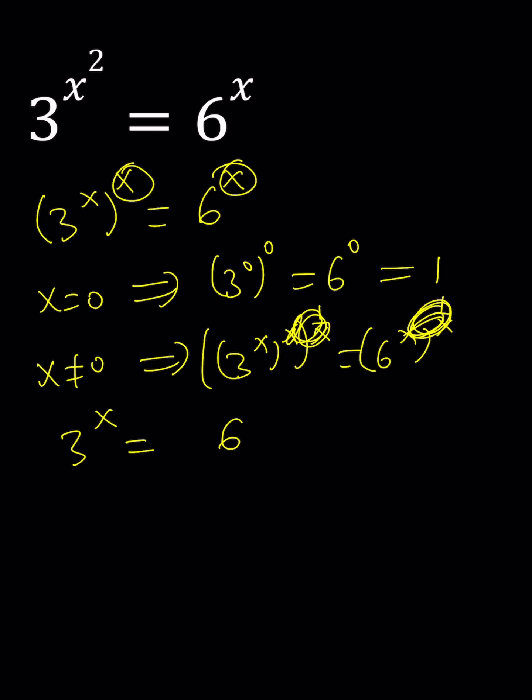Now at this point to find the second solution we're going to log both sides. You can use any base you want. I'll use just base 10. You can also use ln for natural log but I use log for base 10. And then you can use the power rule move the x to the front: x times log 3 is equal to log 6. And then finally x becomes log 6 divided by log 3.